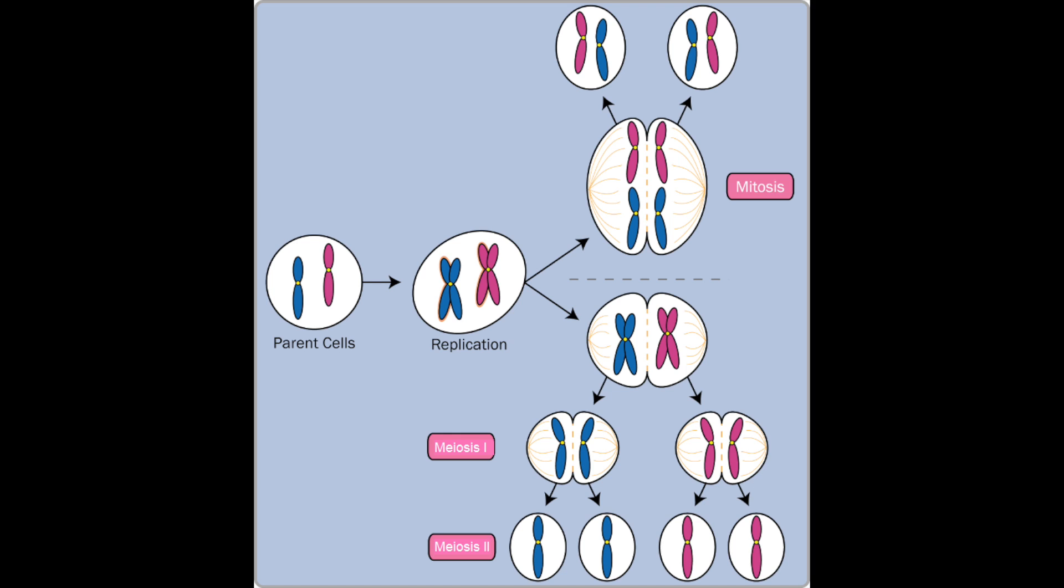Gametes are made by meiosis and unlike mitosis where they are identical, there is variety in meiosis. When a cell divides to form gametes, the chromosomes are copied so that there are four sets. The cell then divides to form four gametes.